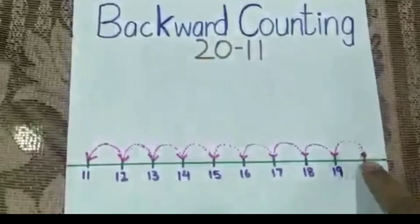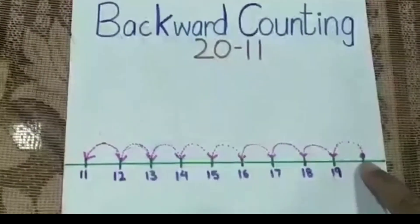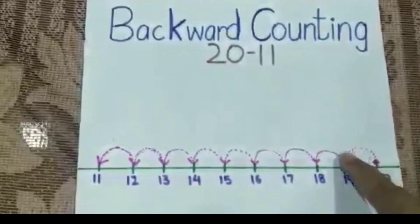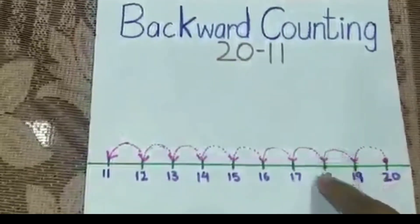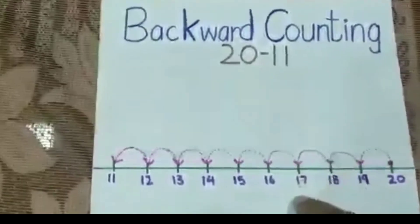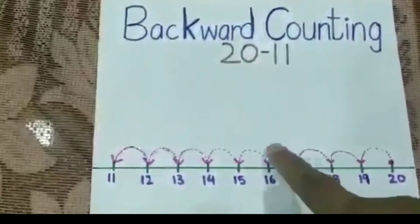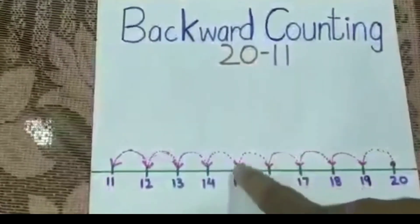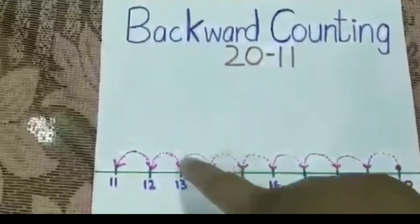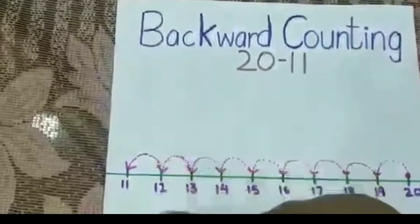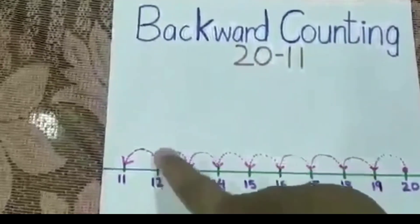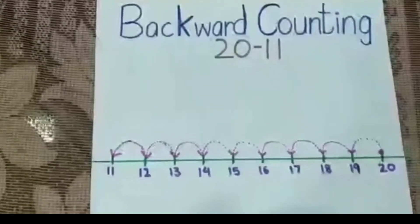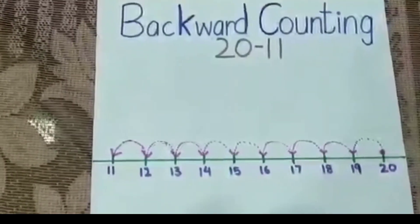So let's start. We are starting from 20. Can you see a dot here? 20, 19, 18, 17, 16, 15, 14, 13, 12, 11. Easy! So you can also do this at home.